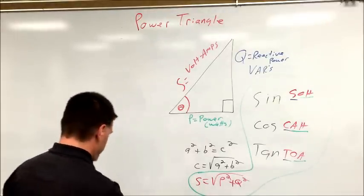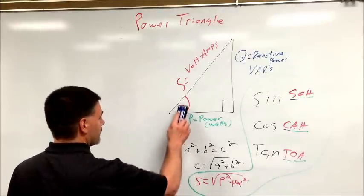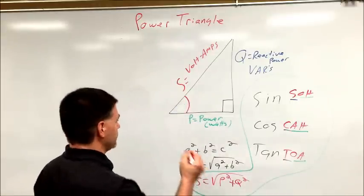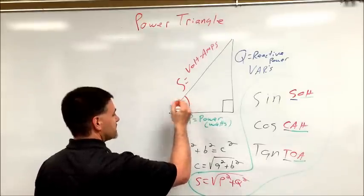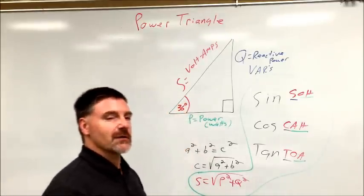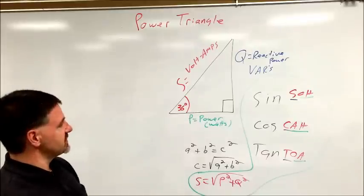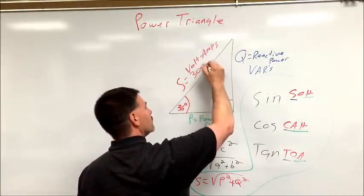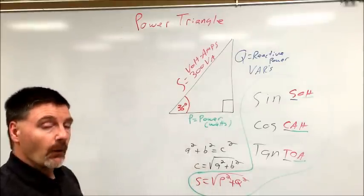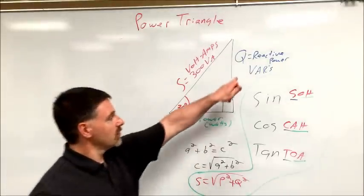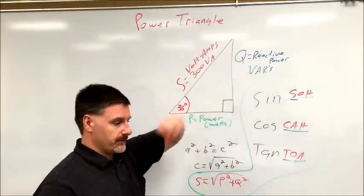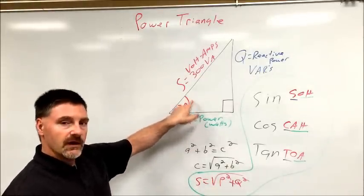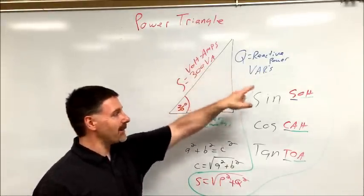Quick example. If I told you that angle theta is 36 degrees, that's in the homework, that's why I picked it. If angle theta is 36 degrees and S equaled 300 volt amps, if I wanted you to solve for Q, we need to pick a trig function that will allow us to use the angle, the hypotenuse, and the opposite side.